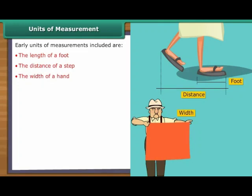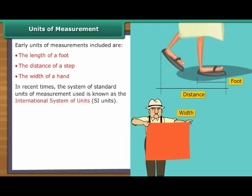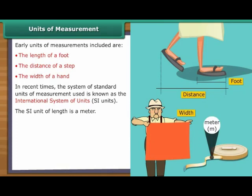To standardise the units, a metric system was put in place. This system is a standard unit of measurement and the system of standard units of measurement used now is known as the International System of Units or SI Units. The SI unit of length is a metre.